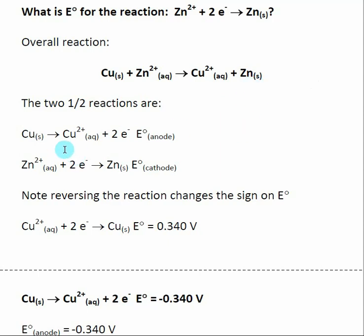Because the copper half reaction is an oxidation, we know this is E naught anode. And because the zinc half reaction is a reduction, this is E naught cathode for our overall electrochemical cell.